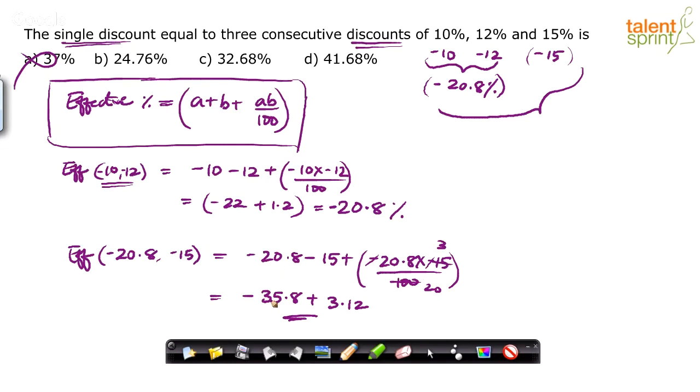Now, minus 35 plus 3 is minus 32. 0.8 minus 1.2 is 0.68. So 32.68. So overall, discount is going to be 32.68 percent, which is option C.